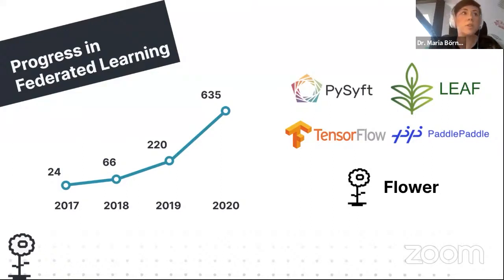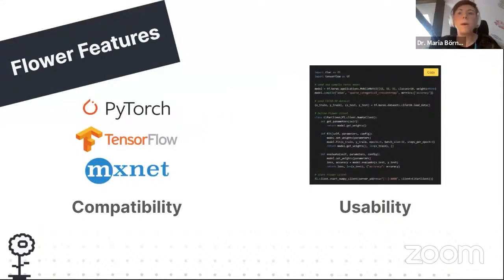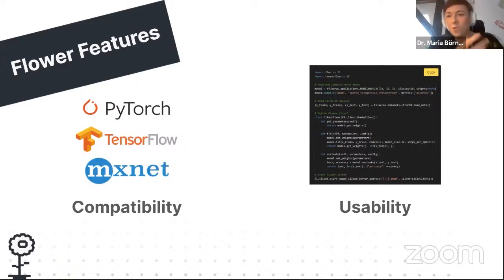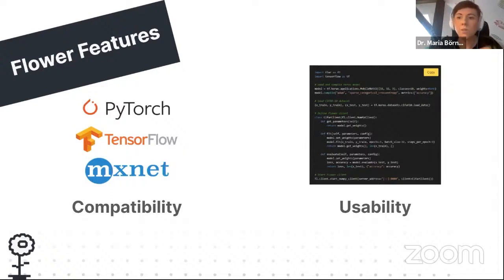Flower allows federated learning to be brought into production. It is compatible with other machine learning frameworks such as PyTorch, TensorFlow, and MXNet, and we are also preparing some additional examples — so stay tuned. We know that you put a lot of sweat and tears into your machine learning pipelines and workloads, so we wanted to take those existing machine learning workloads and just run them federated. There is no need to learn any new federated learning toolkit when you switch machine learning frameworks.